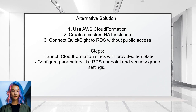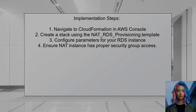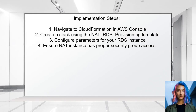An alternative solution involves using AWS CloudFormation to connect your RDS instance to QuickSight without making it publicly accessible. They suggest creating a custom NAT instance that allows QuickSight to access your RDS securely. To implement this, you'll need to follow specific steps in the AWS console, including selecting the template, entering required variables, and ensuring the NAT instance has access to your RDS instance through security group settings.